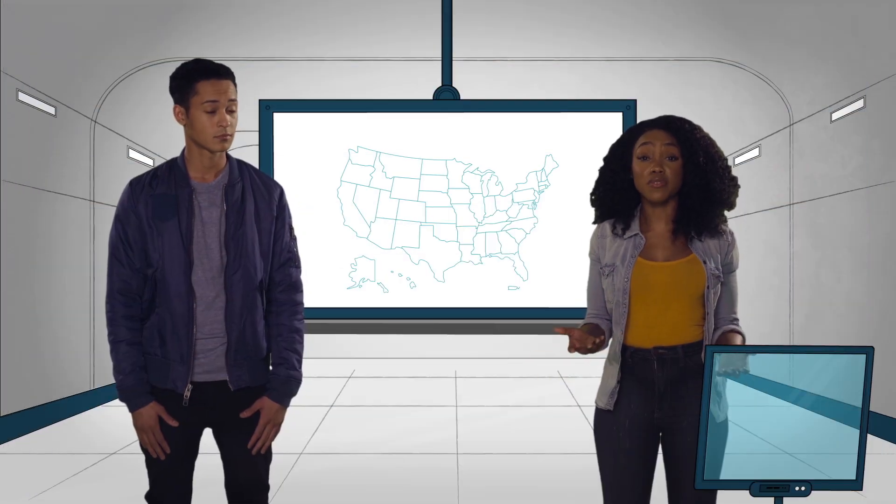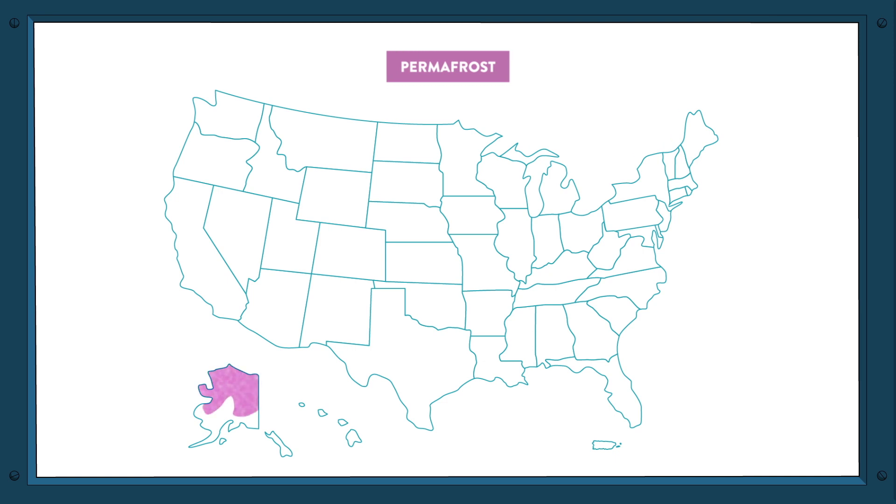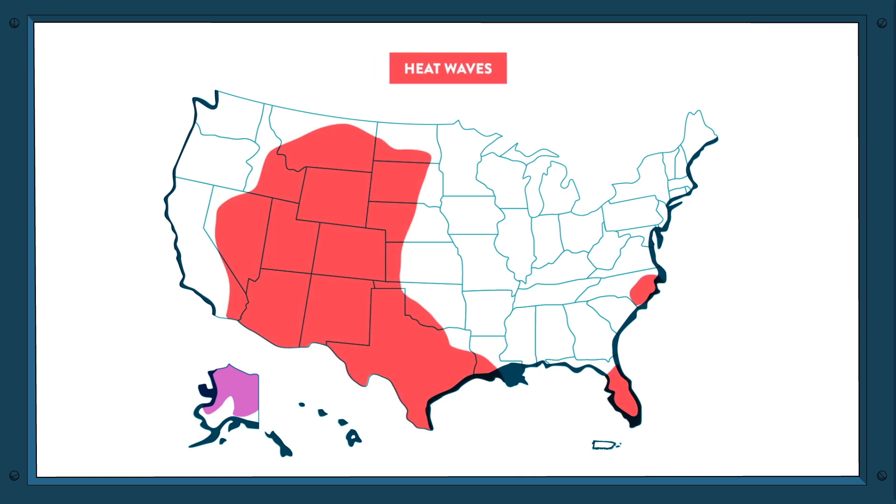What does this all mean for the US? Towns built on icy permafrost will just disappear. But even if you don't live in Alaska, maybe you live on a coast where rising sea levels could put your house underwater. Does your hometown get heat waves? They're getting worse.